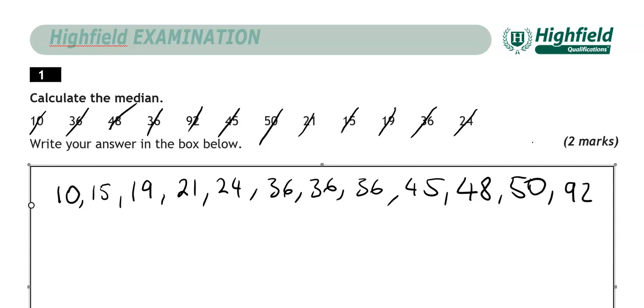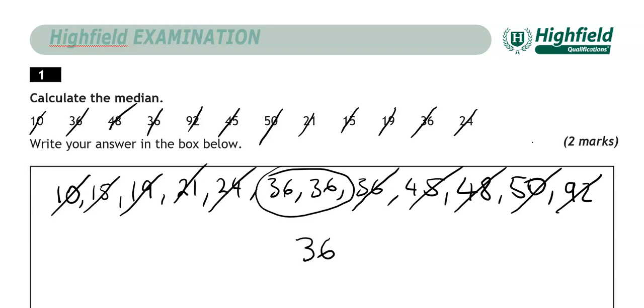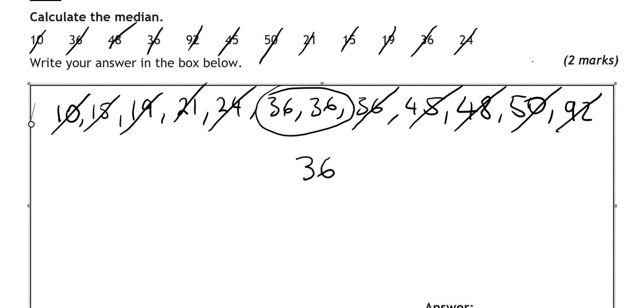We've got 36 and another 36 and another 36 and 45, 48, 50 and 92. So I'm going to cross them out one on each side to find out what sits in the middle. So we've got two numbers, 36 and 36. So in this case we don't need to add them and divide by 2, just go 36 because it's the same number. So 36 is the median of this data set.